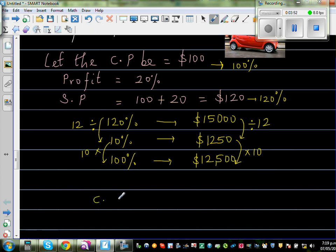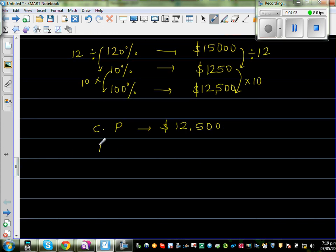So let us confirm our answer. If the cost price of the car is $12,500, profit is 20% of it. So you find 20% of 12,500.